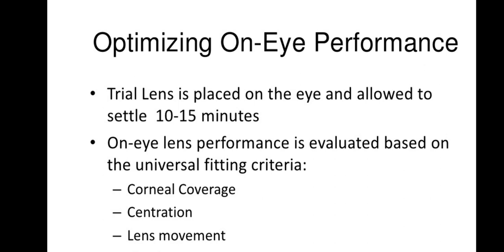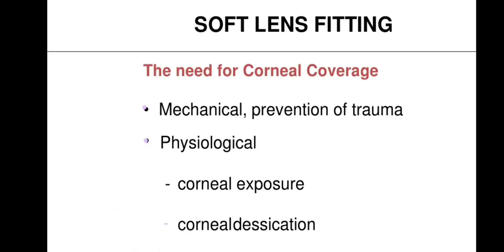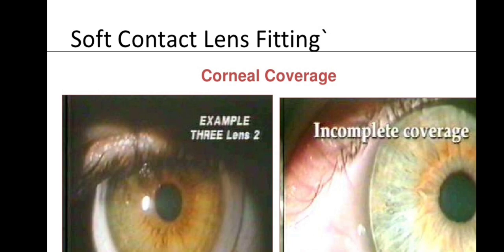After placing the trial lens and allowing 10–15 minutes to settle, evaluate lens performance. Assess corneal coverage: the lens must cover the entire cornea with approximately 2 mm beyond the limbus to prevent mechanical trauma, corneal exposure, or desiccation. Incomplete coverage — where the lens border does not extend 2 mm beyond the limbus — indicates the lens is too flat or too steep.